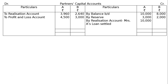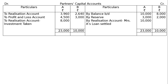Profit and Loss Account — this is the accumulated loss on the assets side, written off in the ratio of 3 to 2: Rs.4,500 for A and Rs.3,000 for B. Next, to Realization Account: Investment taken by A, Rs.8,000. Total the credit side — Rs.23,000 and Rs.10,000. Final payment: To Realization, Bank Account — Rs.6,540 for A and Rs.4,360 for B.